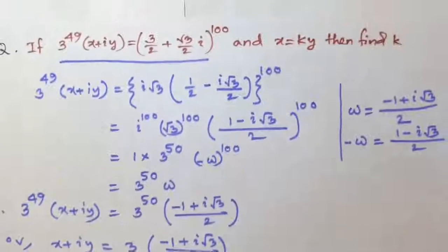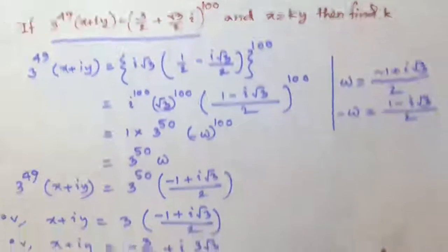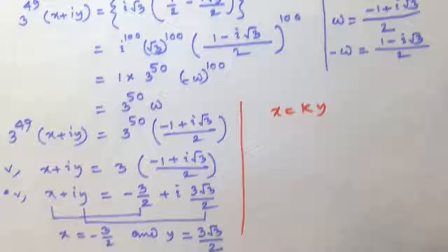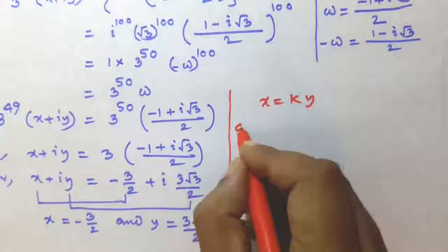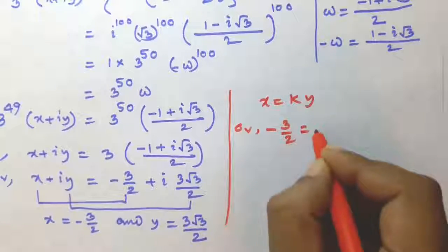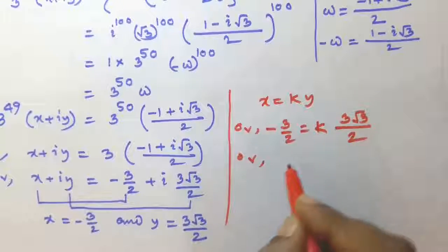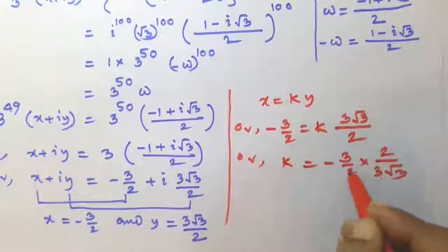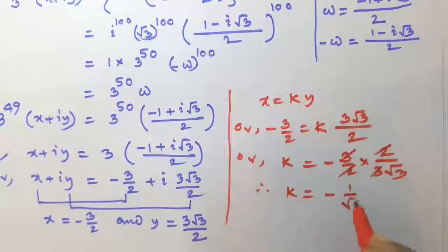Now, the second condition given is x is equal to ky. So, in the equation x is equal to ky, we replace x and y by the just-found values: minus 3 by 2 and 3 root 3 divided by 2. So, minus 3 by 2 is equal to k into 3 root 3 divided by 2. So, k is equal to minus 3 by 2 into 2 divided by 3 root 3. The 2 and 3 cancel. Therefore, k is equal to minus 1 by root 3.